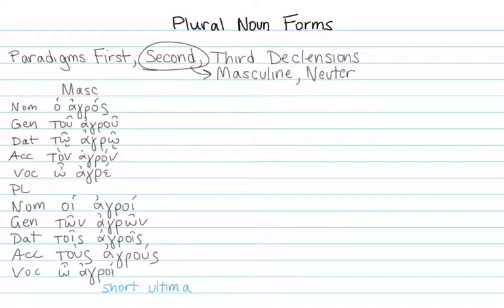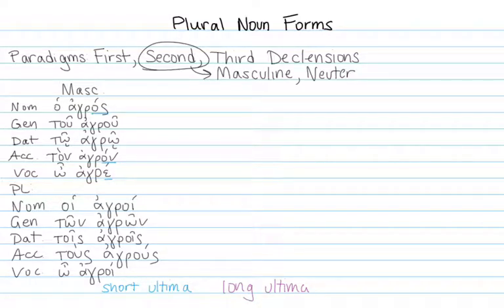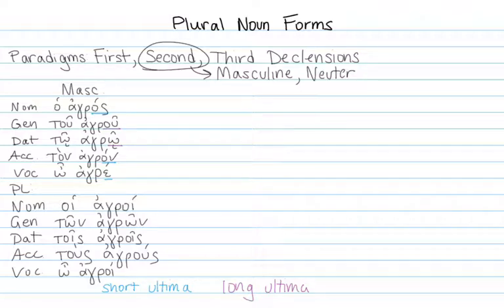If you're wondering why the accents change, let's look first at the singular only. When the ultima is short, it's an acute accent: agros, agron, and agre. If the ultima is long, it changes to a circumflex: agru and agro. The same rules apply in the plural, except many things have happened that make it look like the rules have been violated.